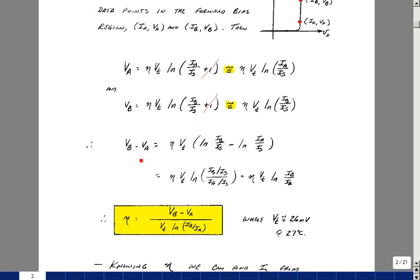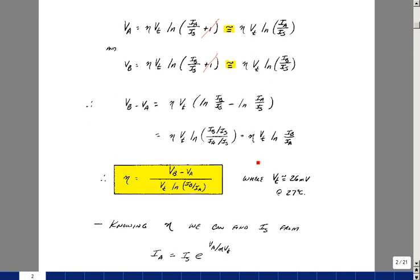If we subtract these two voltages, we have a common eta V sub t, and we've got the difference of two natural logs. You recall from algebra that the difference of two logs is also the log of their ratio. So if I take the first term and divide it by the second, the term I sub s drops out.